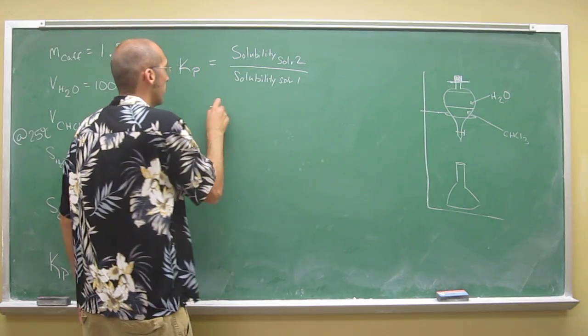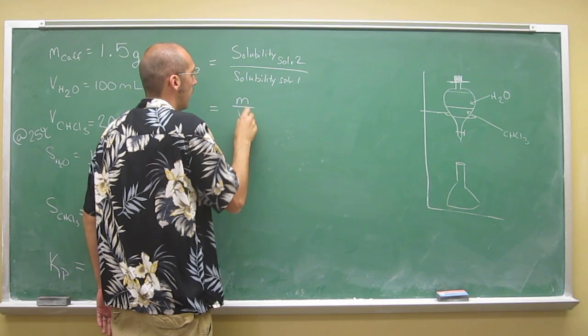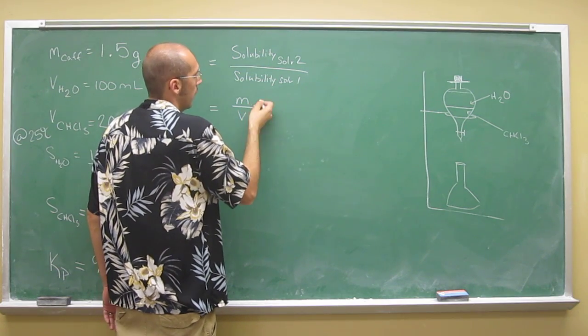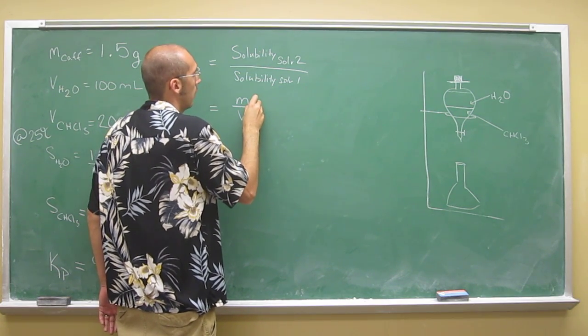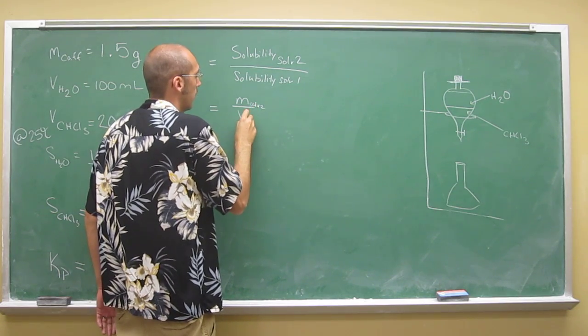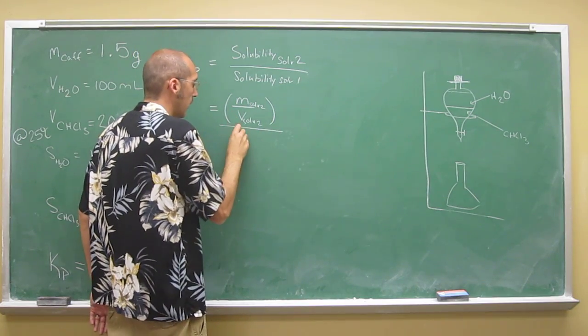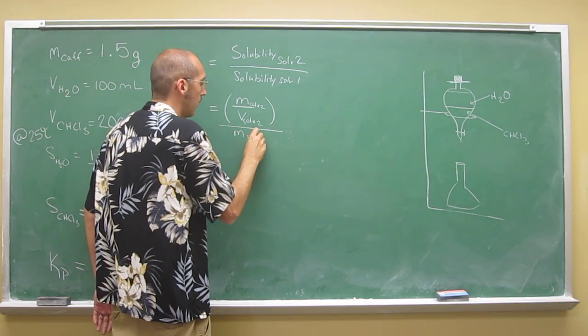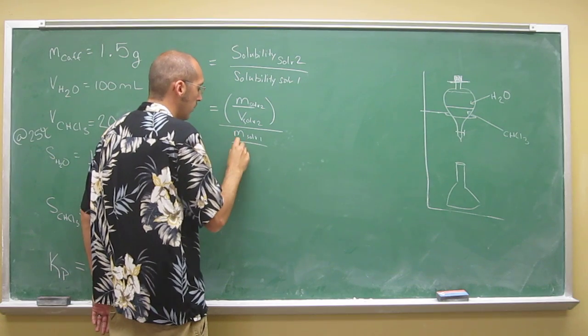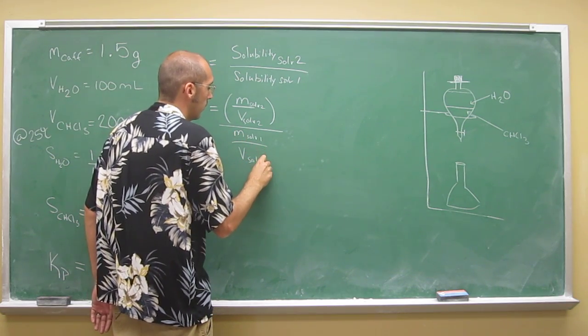So mass in solvent 2 per volume of solvent 2 divided by the mass in solvent 1 divided by the volume of solvent 1.